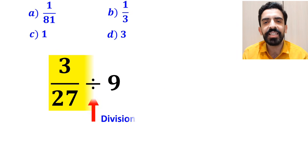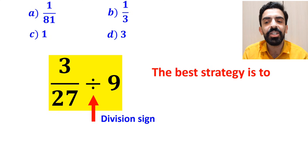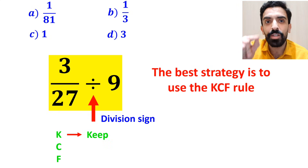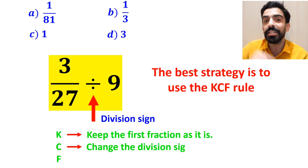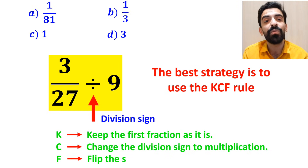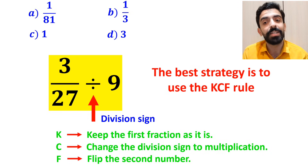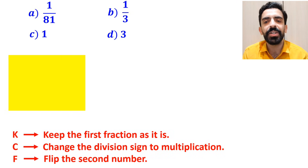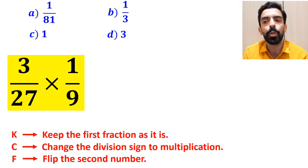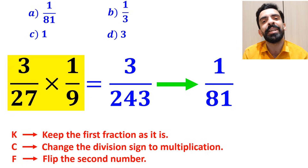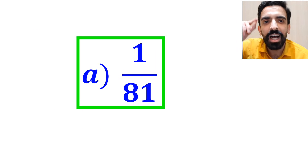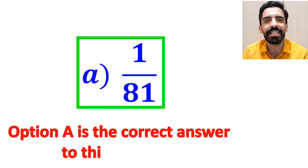Whenever we see a division sign between two terms, the best strategy is to use the KCF rule. In this rule, K stands for keep the first fraction as it is, C stands for change the division sign to multiplication, and F stands for flip the second number. So instead of the highlighted part, we write it as 3 over 27 multiplied by 1 over 9, which ultimately gives us 3 over 243, and it simplifies to 1 over 81. Option A is the correct answer to this question.